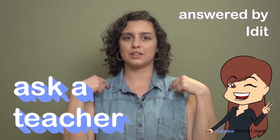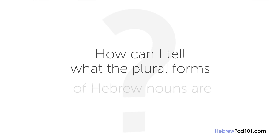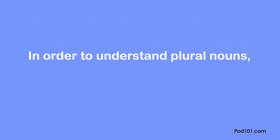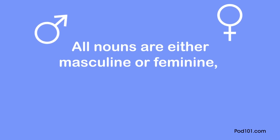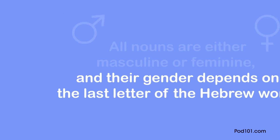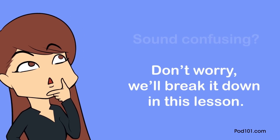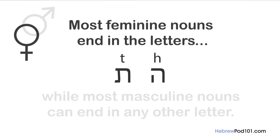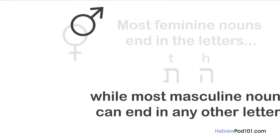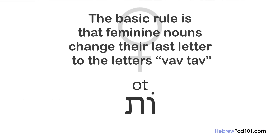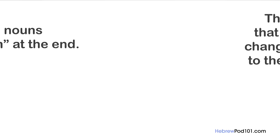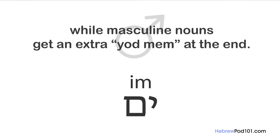Welcome to Ask a Teacher where I'll answer some of your most common Hebrew questions. The question for this lesson is: how can I tell what the plural forms of Hebrew nouns are? All nouns are either masculine or feminine, and their gender depends on the last letter of the Hebrew word. Most feminine nouns end in the letters 'taf' (t) or 'hey' (h), while most masculine nouns end in any other letter. The basic rule is that feminine nouns change the last letter to 'vav-taf' (ot), while masculine nouns get an extra 'yod-mem' (im) at the end.